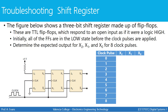Now that we know a little bit about registers, we're going to do some troubleshooting. The figure below shows a three-bit shift register made up of TTL flip-flops, which respond to an open input as if it were a logic high. So if you ever leave an input to an OR gate or AND gate unconnected, that second input will always be perceived to be high. Initially, all flip-flops are in a low state before a clock pulse is applied, and we're going to determine the expected output for X2, X1, and X0 for eight clock pulses.